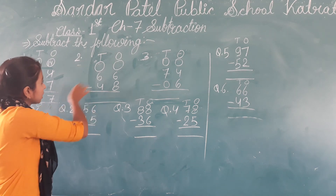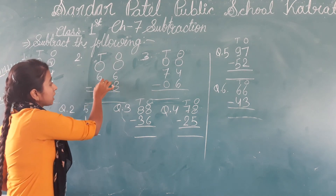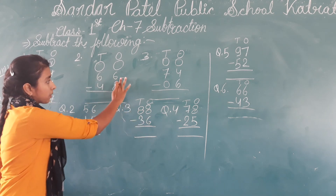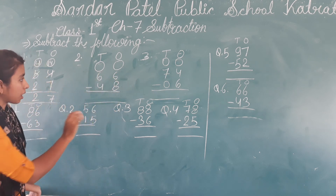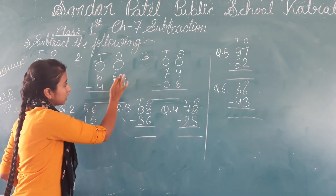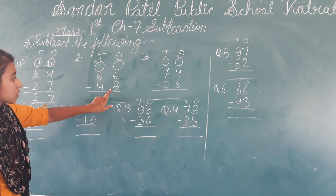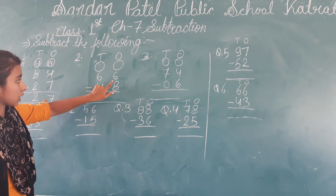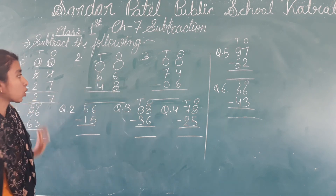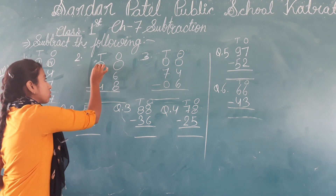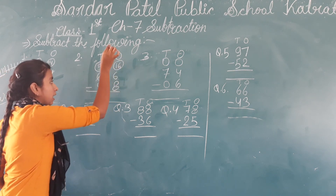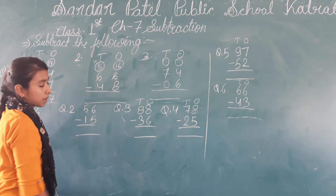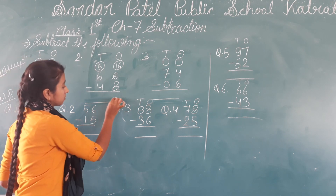Now let's do the second question. The second question: we have to subtract 48 from 66. The ones digit of 66 is 6 and we are subtracting 8. 6 is smaller than 8, so we will take borrowing from the tens place. The ones place becomes 16. We cut the 6, take borrowing, and now 16 minus 8 gives us the answer 8.